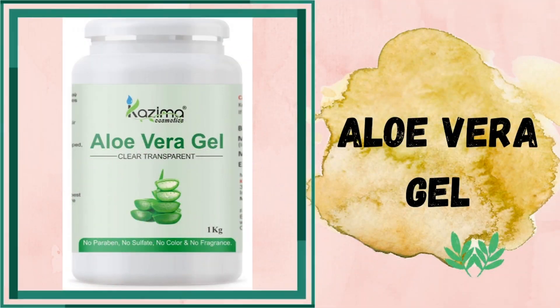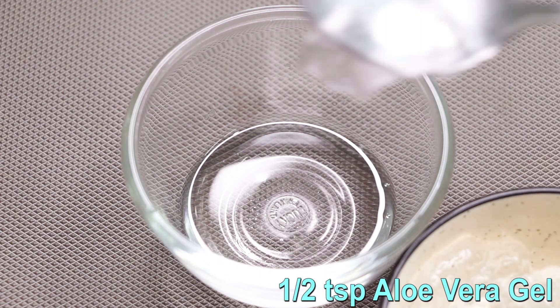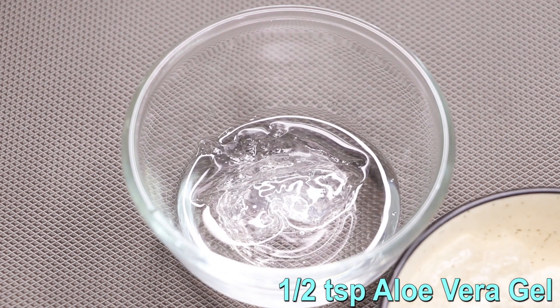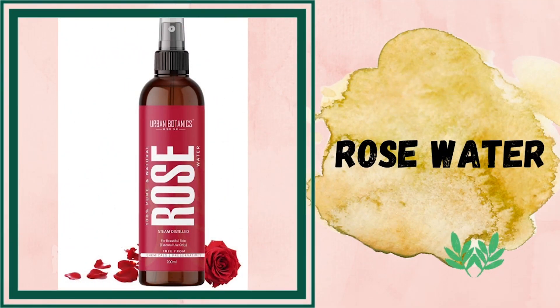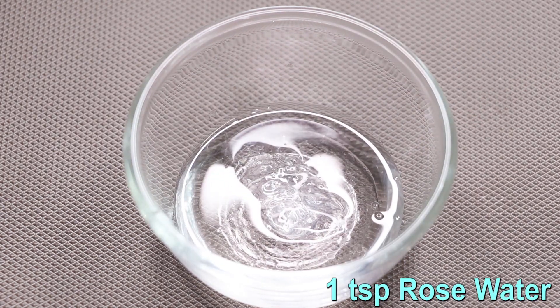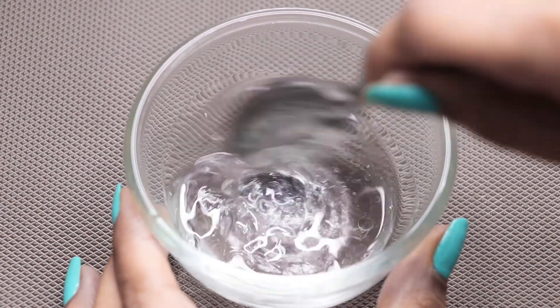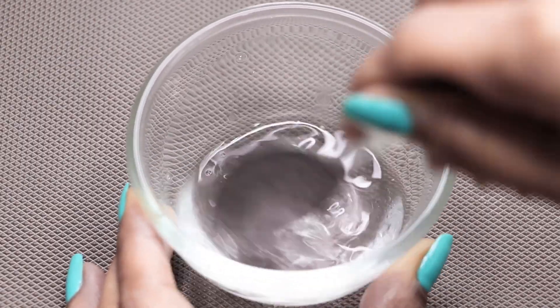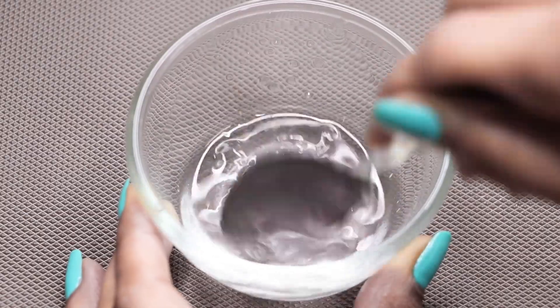Then we need aloe vera gel. Here I'm adding half a teaspoon of aloe vera gel. After adding aloe vera gel, we need rose water. Now we mix all the ingredients to make a smooth and creamy consistency.